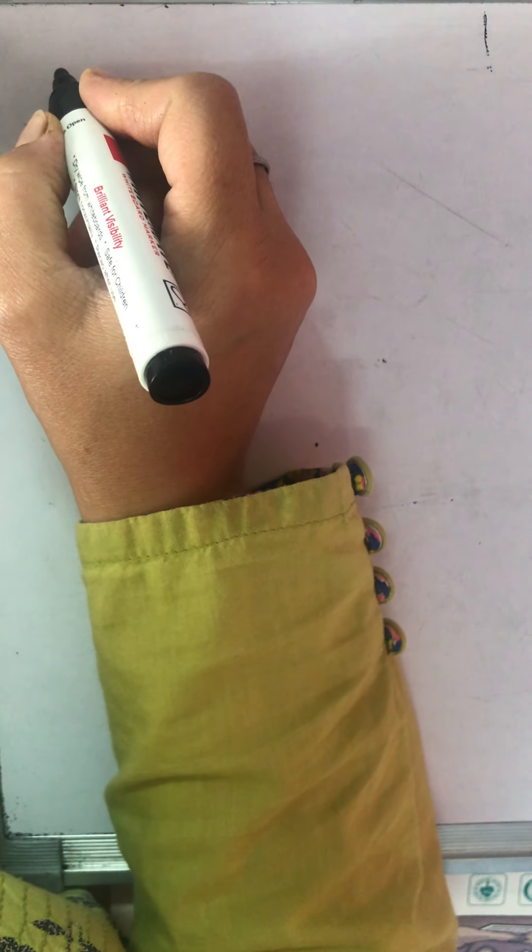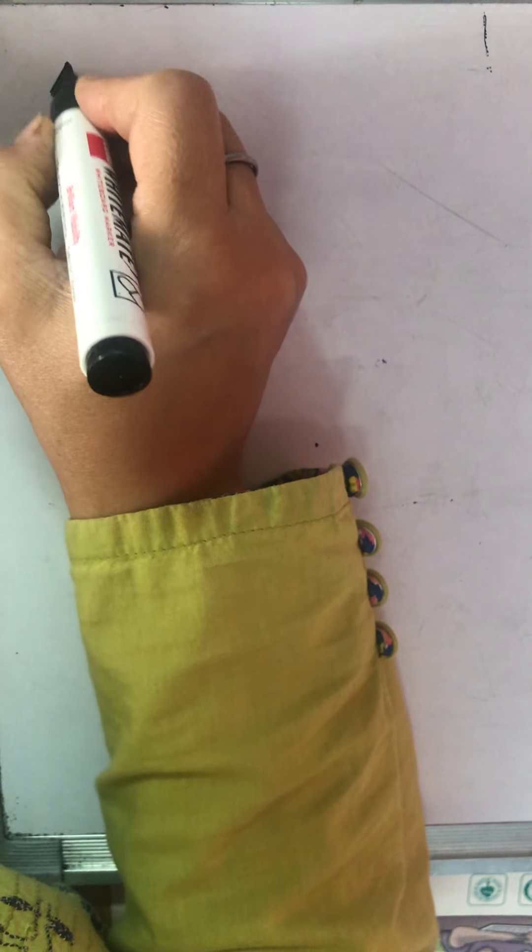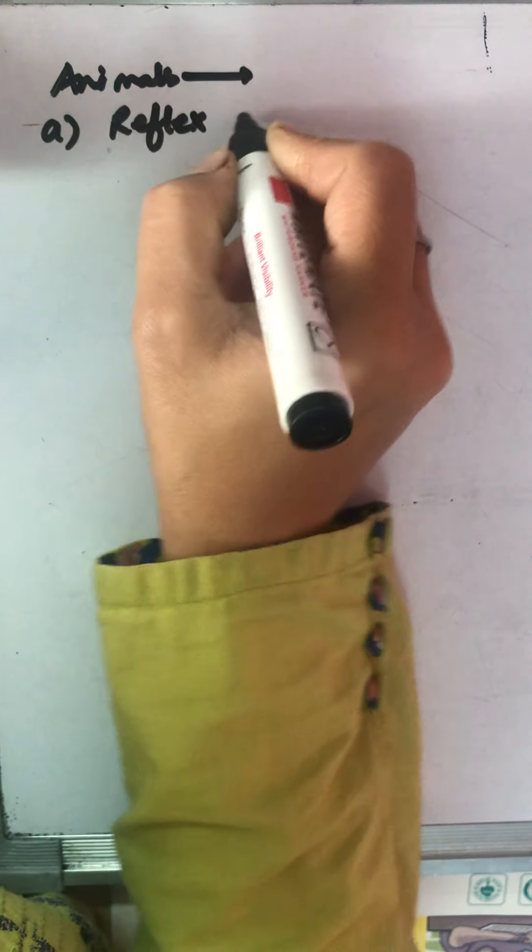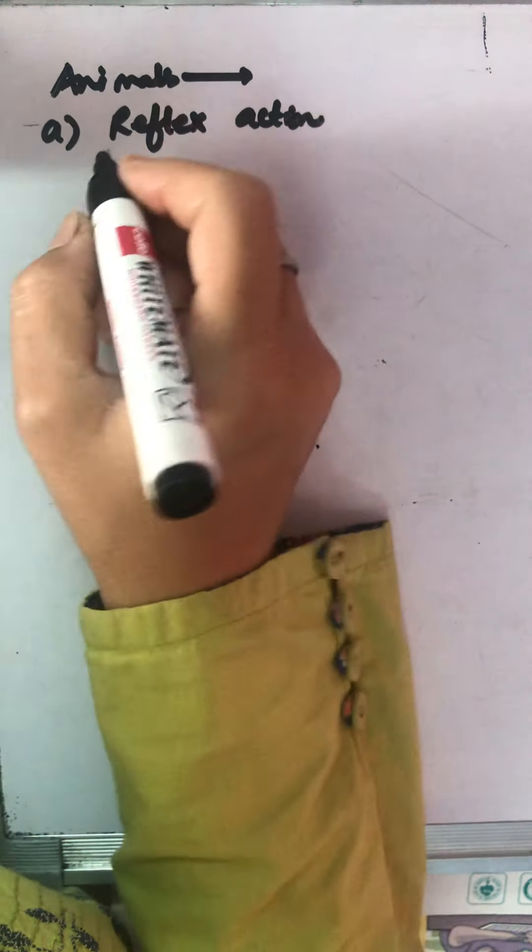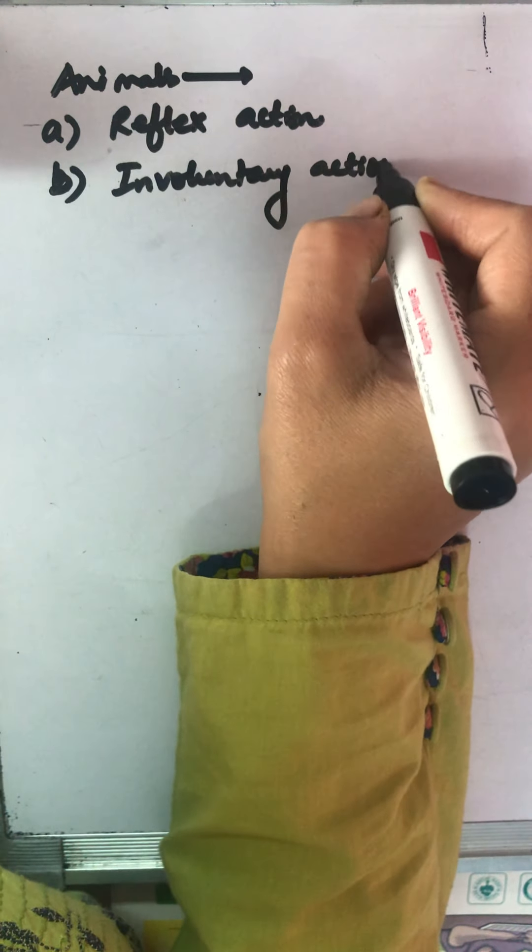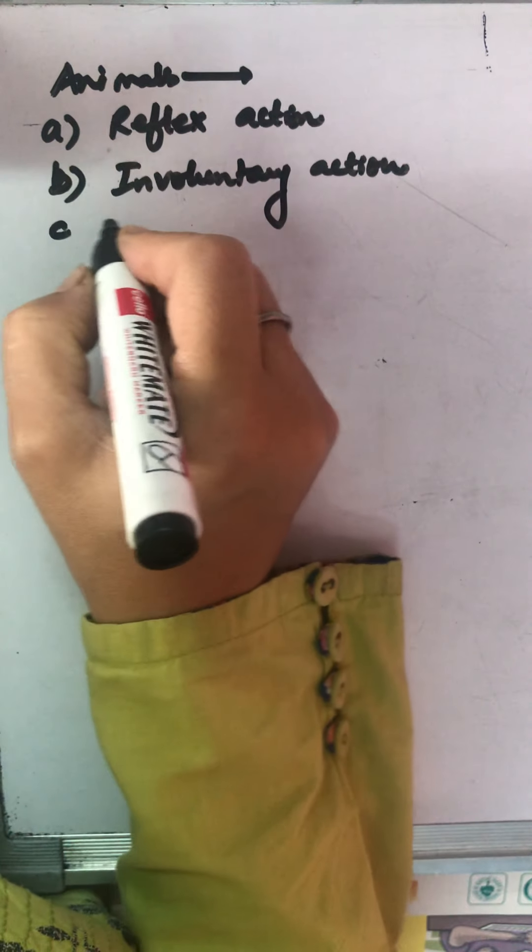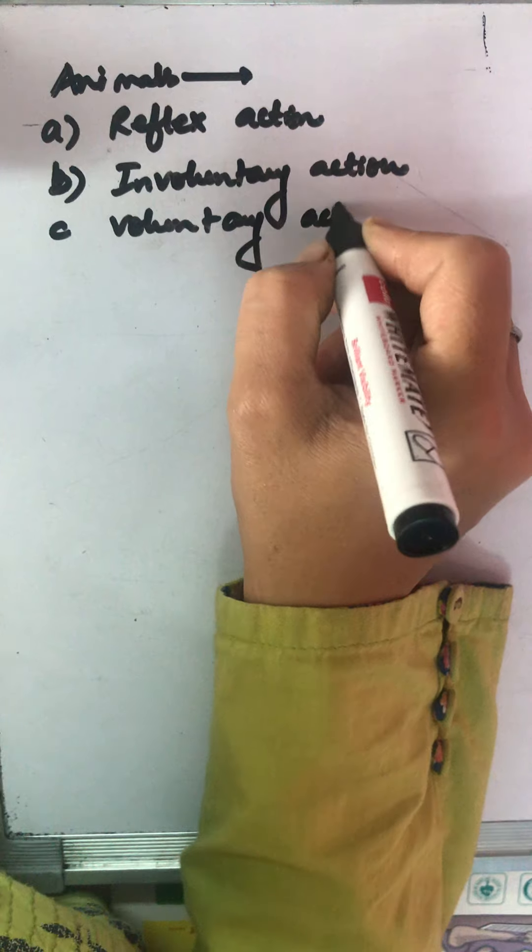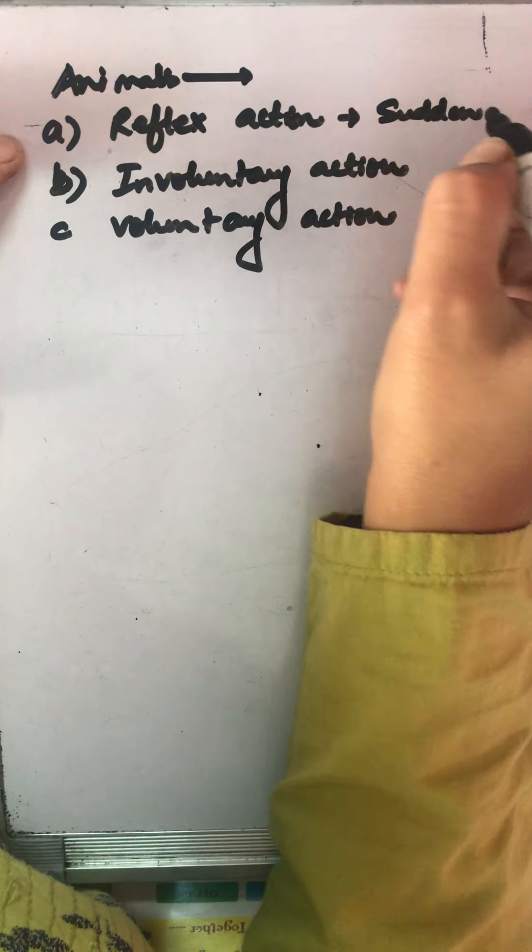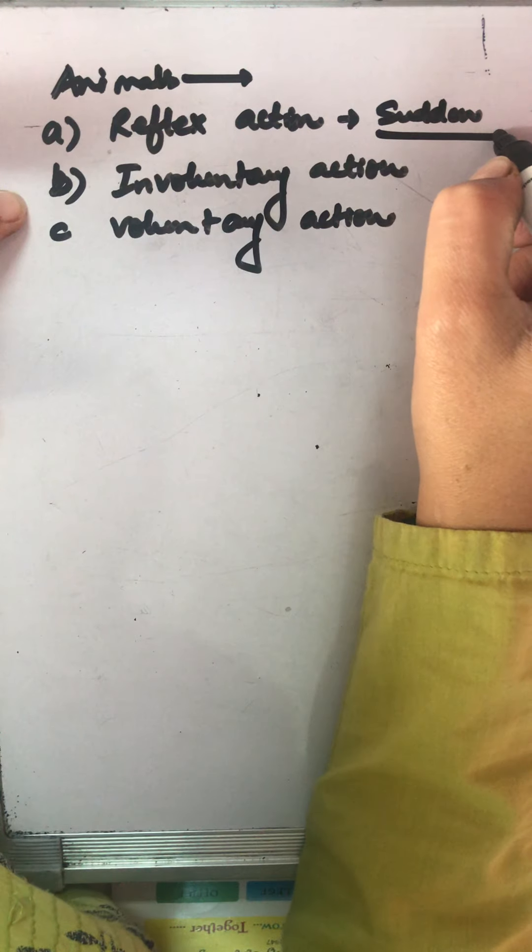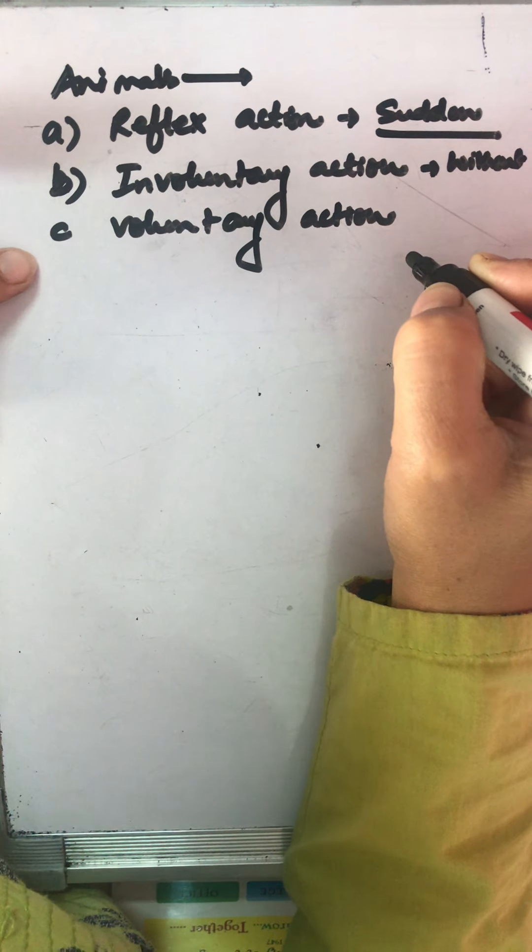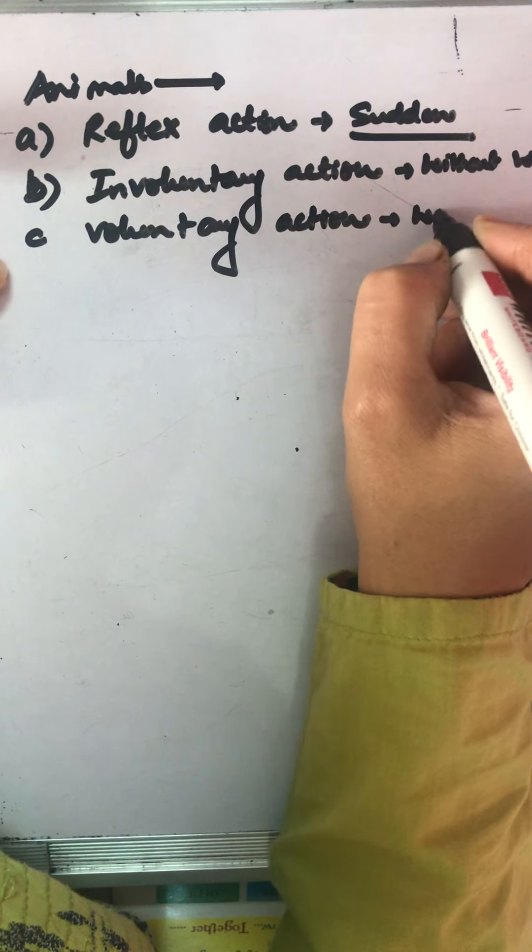Now we are taking up another topic where we are discussing that animals perform three types of actions. First is reflex action, second is involuntary action, and third is voluntary action. This reflex action is always a sudden and quick response, involuntary actions are performed without will, and voluntary actions are performed with your will.